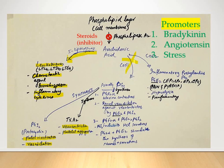Now, what happens when we give aspirin? Aspirin is going to inhibit the cyclooxygenase pathway, as we discussed. Scientists have been successful in preparing selective cyclooxygenase-2 inhibitors, and these are free of the possible adverse effects associated with aspirin inhibiting both COX isoforms.